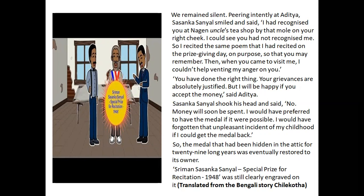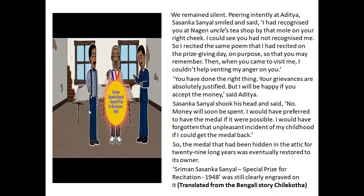Sasanka had recognized Aditya at Nagin's tea shop from the mole on his right cheek and had recited the same poem he had recited as a young boy when he won the prize. Aditya said his grievances were absolutely justified but he would be happy if Sasanka accepted the money. Sasanka shook his head and said money would soon be spent — he wanted only the medal. So they went back and got the medal, which had been hidden in the attic for 29 long years, and returned it to Sasanka Sanyal, the rightful winner.